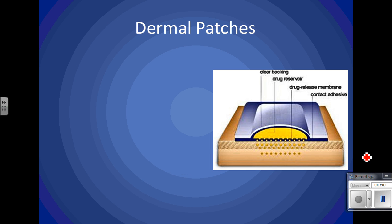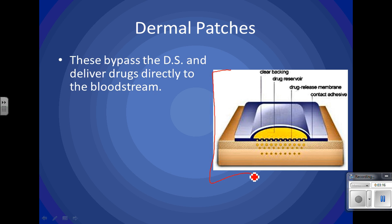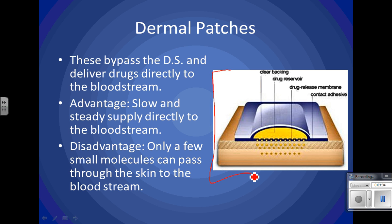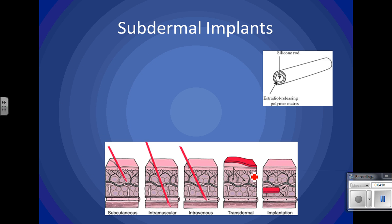Dermal patches bypass the digestive system and deliver drugs directly to the bloodstream through the skin. They provide a slow and steady supply — not a big hit all at once and then nothing. The disadvantage is that not many molecules can pass directly through the skin into the bloodstream. They tend to work for things like nicotine patches and some hormone replacement. You can see the plastic backing, an area where the drug is kept, a drug-release membrane that slows release, and the adhesive glue.